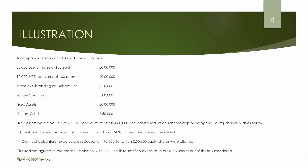We will do a question. A company's position on 31st December 2018 is as follows: 20,000 equity shares of rupees 100 each, total value 20 lakhs; 10,000 6% debentures of 100 each — 10 lakhs; interest outstanding on debentures 1 lakh 20,000; sundry creditors 5 lakhs; fixed assets 20 lakhs; current assets 6 lakh 50,000. Fixed assets were revalued at 9,60,000 and current assets were revalued at 4,80,000. The capital reduction scheme approved by the court was as follows.